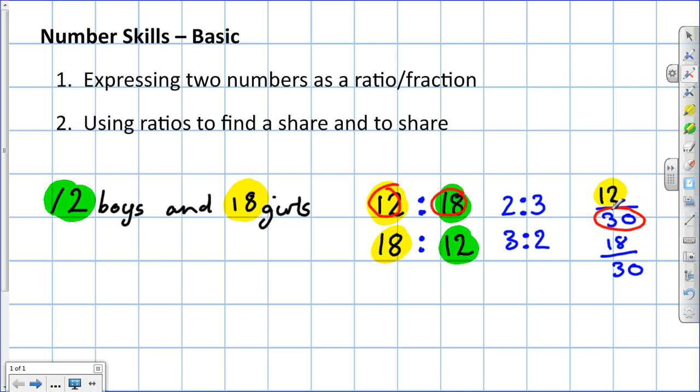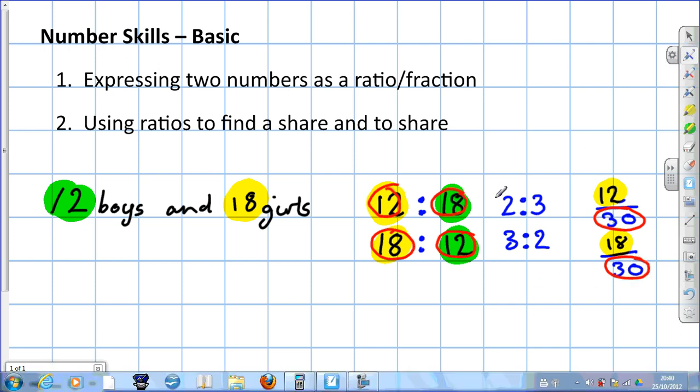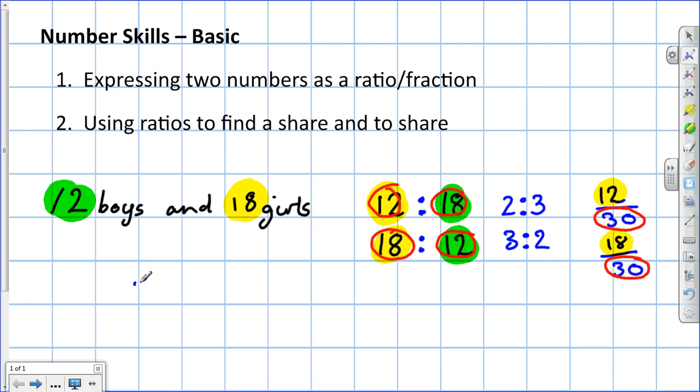Likewise, the fraction of a class that were girls, our numerator is 18, but the denominator is the total. Now, we can use that to swap between ratios and fractions. Let's say we've got a ratio in its simplest form, 2 to 5, and let's say it's the ratio of boys to girls.